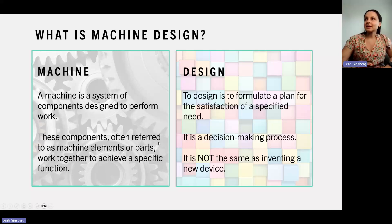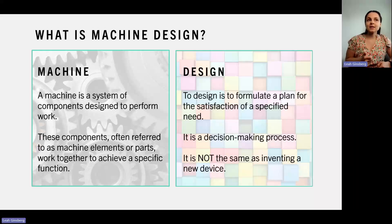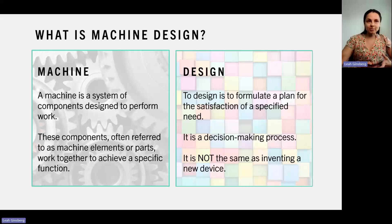Design is to formulate a plan for the satisfaction of a specified need. It is a decision-making process — it's not the same as inventing a device, because it's not just about making something work. It's about making it work efficiently, reliably, and within given constraints. So when we talk about machine design, we're referring to the structured approach that engineers use to develop and refine mechanical systems that perform specific tasks.